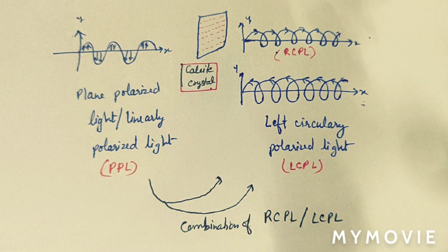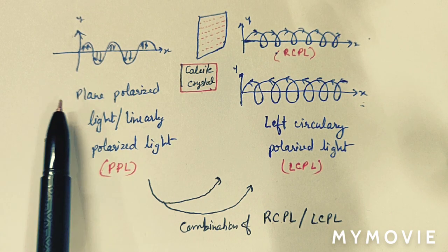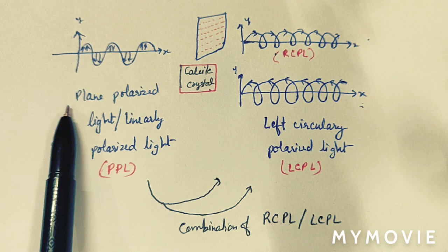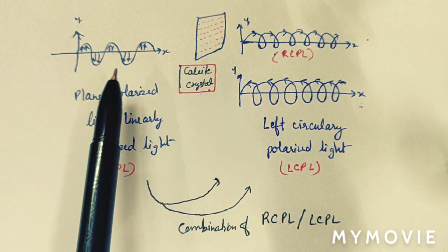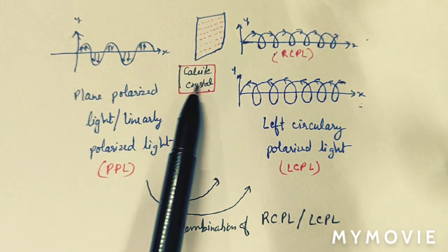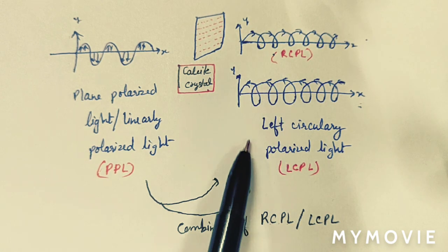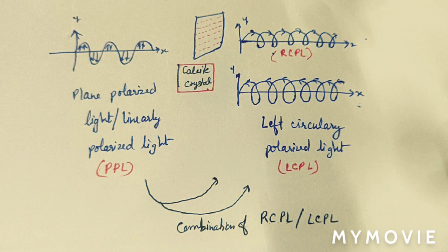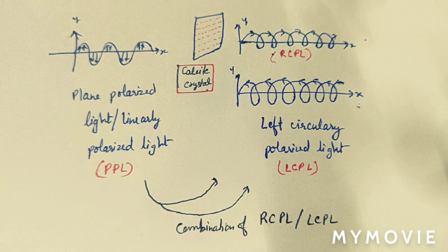To summarize: unpolarized light can be converted into plane polarized light by passing it through a Nicol prism. Then this plane polarized light can be converted into circularly polarized light by passing it through a calcite crystal. We can thus differentiate among unpolarized light, plane polarized light, and circularly polarized light.